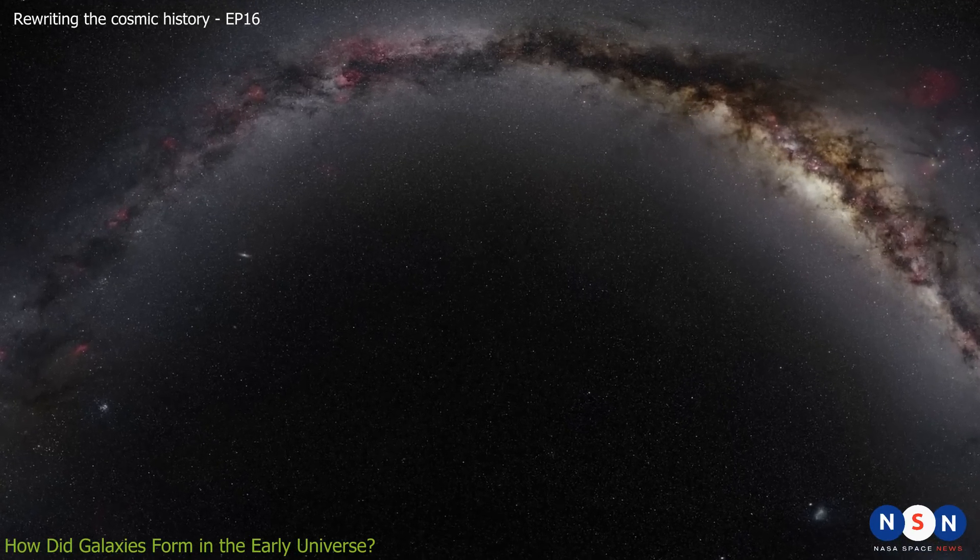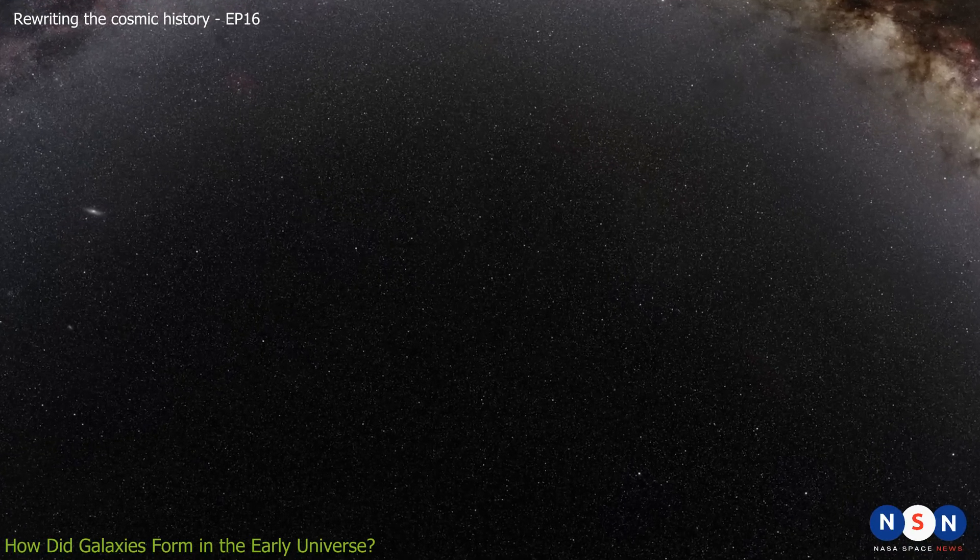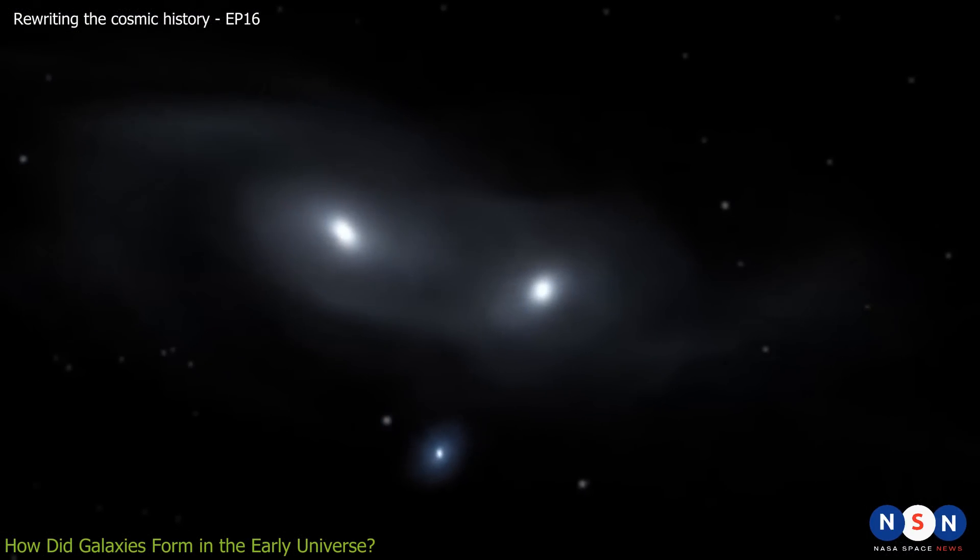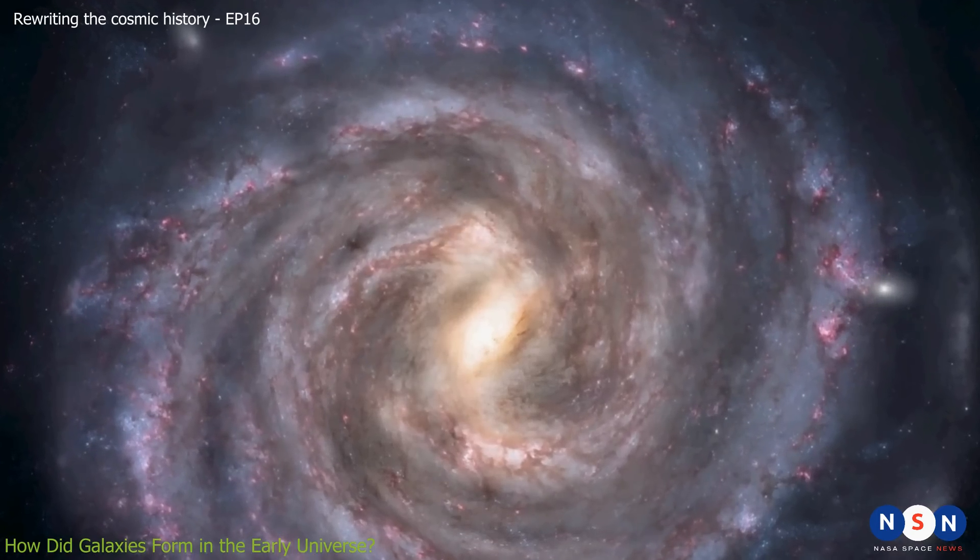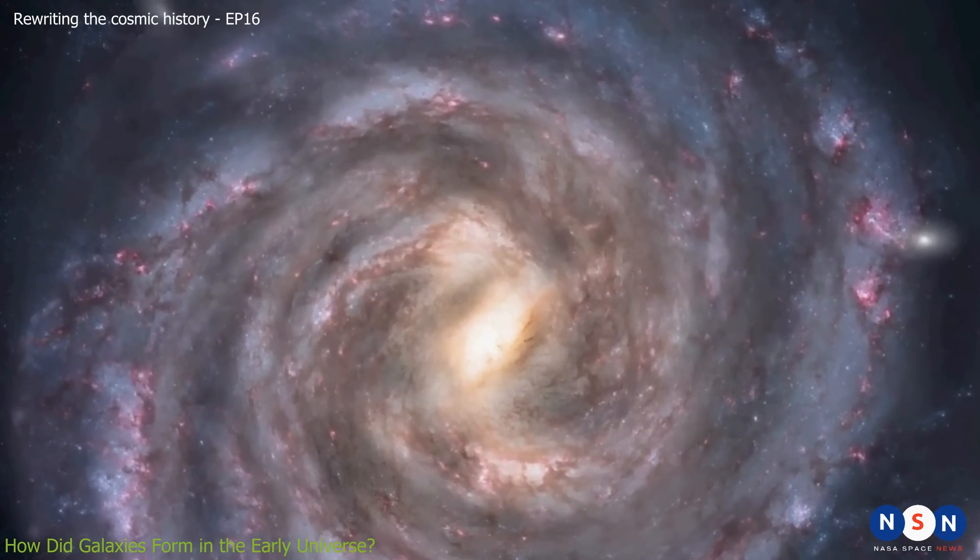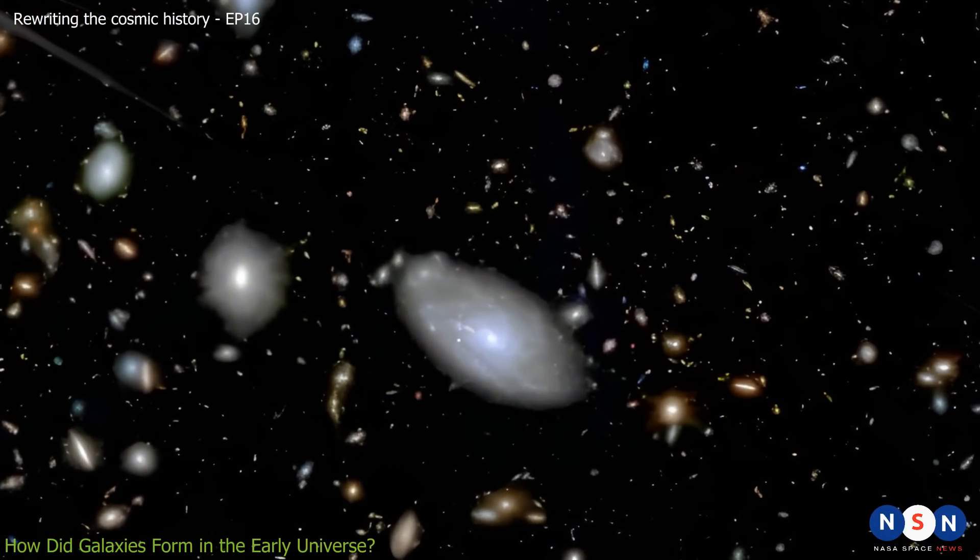The first galaxies were probably dwarf galaxies with less than a billion stars each. Over billions of years, these galaxies collided and coalesced into larger ones, like our own Milky Way, which has hundreds of billions of stars.